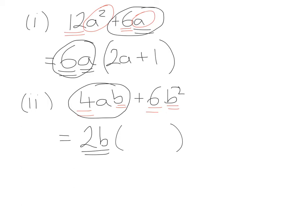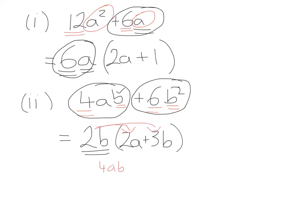Inside the bracket: 2 times what gives me 4? That's 2. The b is already accounted for, but there's an extra a, so I pop on the a, giving 2a. For the second term: 2 times what gives me 6? That's +3. And b multiplied by what gives me b²? That's b, giving +3b. To check: 2b × 2a = 4ab and 2b × 3b = 6b². So the answer is 2b(2a + 3b).